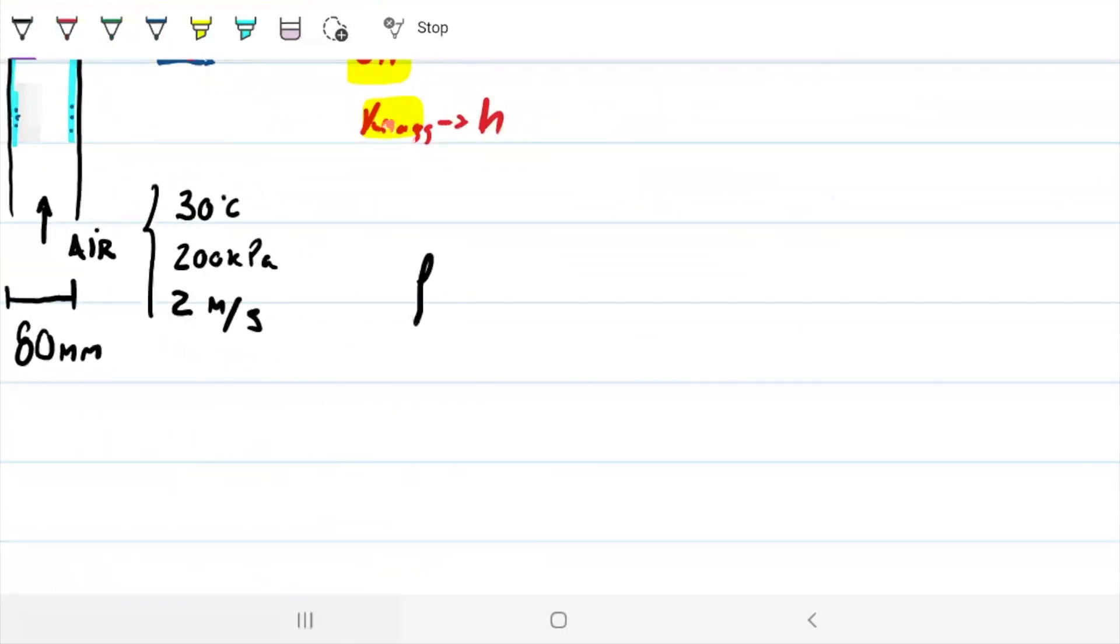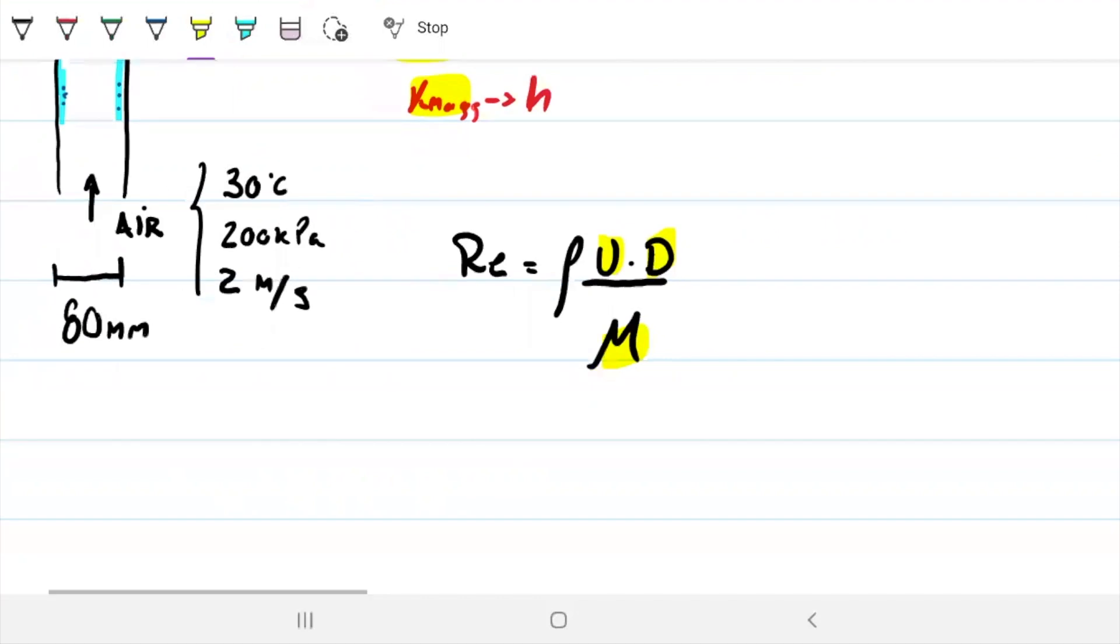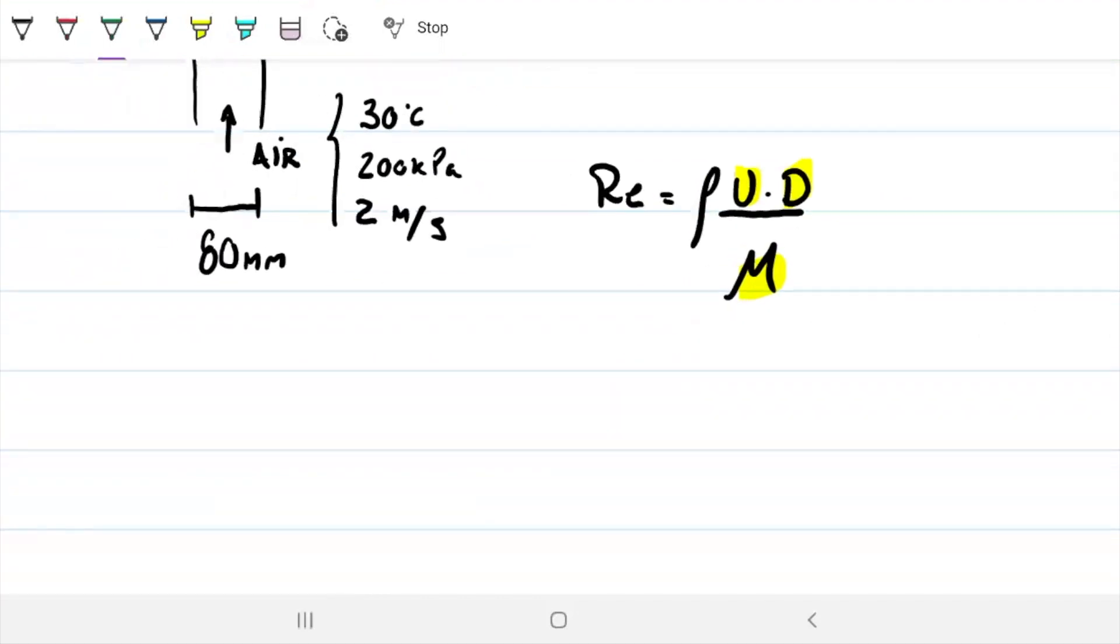We need Reynolds, and for that, we need density, right? So we need Reynolds, and we know Reynolds is density times velocity times characteristic length. In this case, we have diameter. And note how D is playing a role here as diameter. And that's all divided by the dynamic viscosity. This was given. This was given. This was given. We don't have the density. So let's go ahead and get density or specific mass in this case.